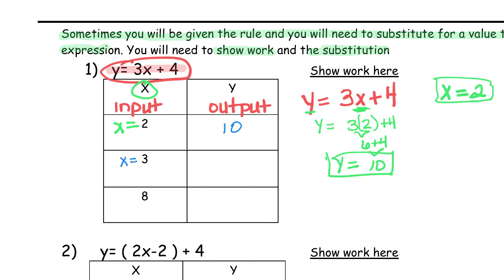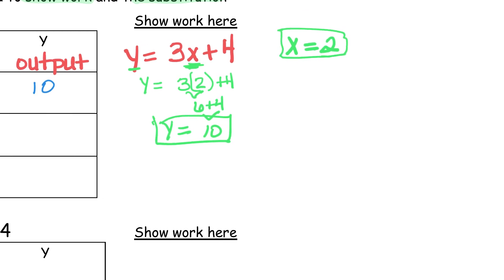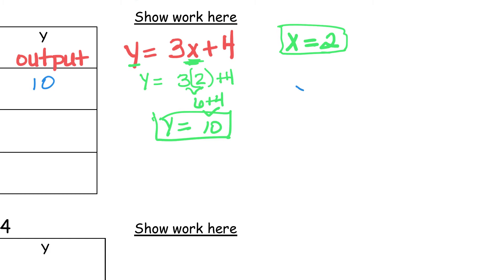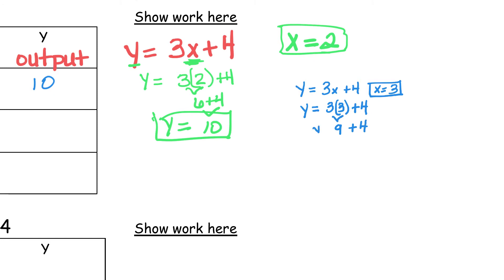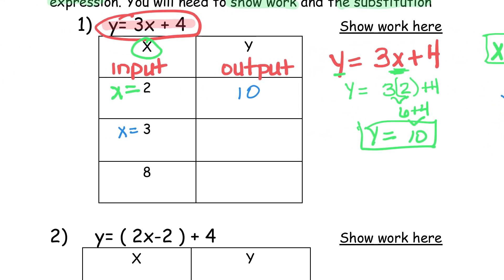Now let's look at the next one. If x is equal to 3, what is my output? I'm going to rewrite the work on the side: y equals 3x plus 4, and x is equal to 3. I'm going to plug in the 3 for the variable x, so it's y equals 3 times 3 plus 4. 3 times 3 is 9, plus 4. So y is equal to 9 plus 4. 9 plus 4 is 13. y is equal to 13. So when x is equal to 3, my output is equal to 13.